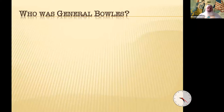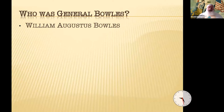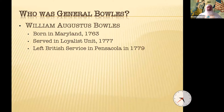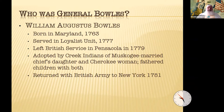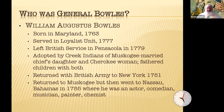Who was General Bowles? He was not hard to find. Born William Augustus Bowles in Maryland in 1763, he served in a Loyalist unit volunteering in 1777 at age 14. Bowles left the British service in Pensacola in 1779 under shady circumstances and was subsequently adopted by some Creek Indians of Muscogee. He ultimately married a minor chief's daughter and also a Cherokee woman, fathering children with both. However, Bowles evacuated with the British Army to New York in 1781.